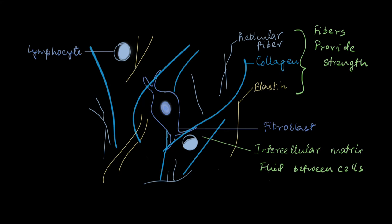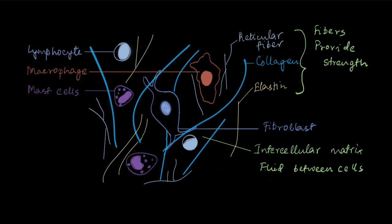There are the lymphocytes, there are macrophages, and then there are the mast cells. So all of these are different types of WBCs, which provide defense against microorganisms.